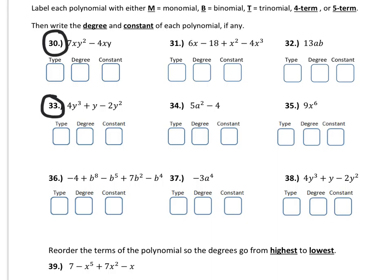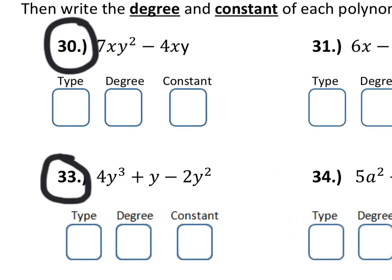So, in number 30, we have 7xy squared minus 4xy. So, there are two terms here, the 7xy squared and the 4xy. Because it's two terms, that is a binomial.